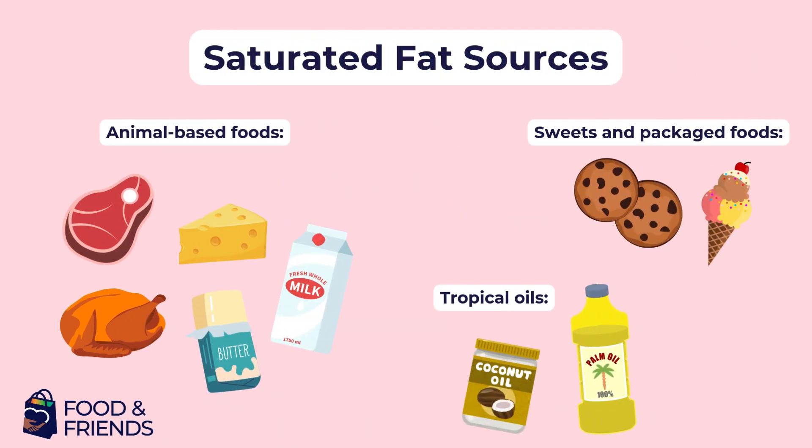Saturated fats primarily come from animal sources such as beef, pork, lamb, chicken — especially with the skin on — and full-fat dairy products such as whole milk and full-fat yogurt. The few plant sources of saturated fat include tropical oils like coconut and palm oil. Saturated fat is also commonly found in baked or fried foods.